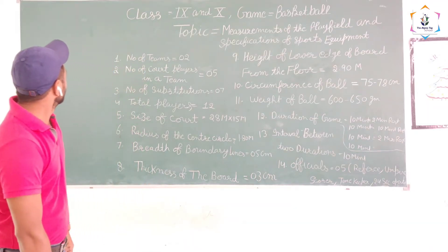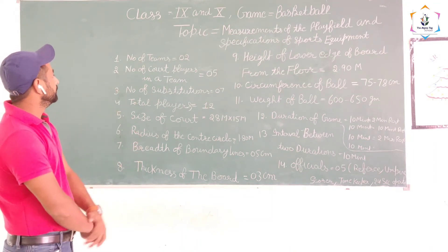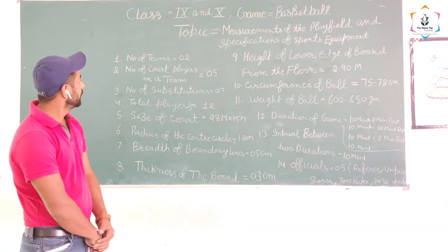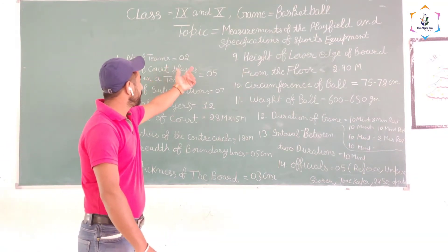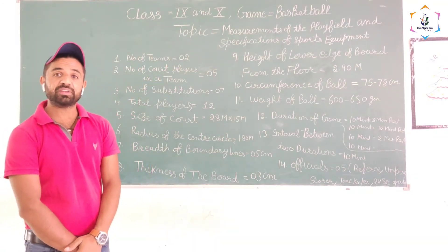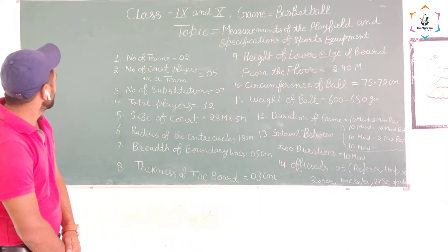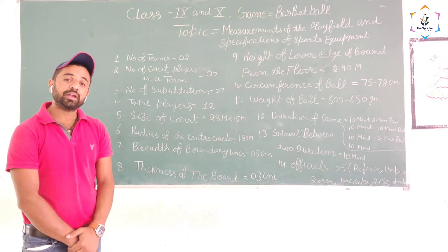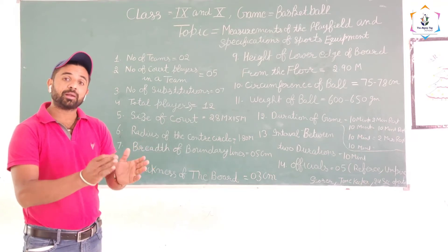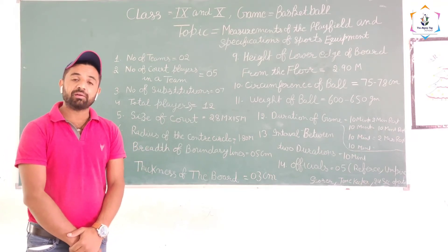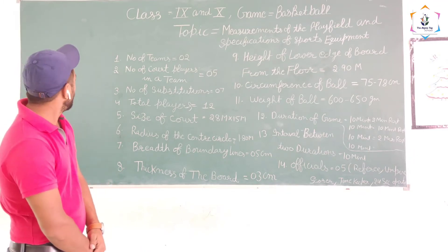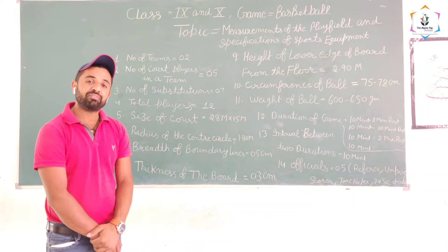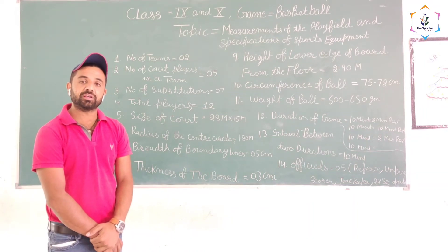First point for today's lesson: how many teams in a match? Two teams are necessary for a single match. Next point: number of players in a team. Every team has 5 players. And number of substitutions — 7 players in every team.